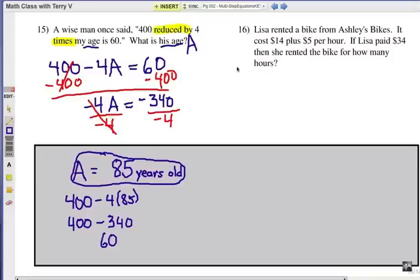All right, number 16. If you haven't tried this yet, you should. And let's take a look at some of the important words of the question. Lisa rented a bike from Ashley's Bikes. It cost $14 plus $5 per hour. If Lisa paid $34, then she rented the bike for how many hours?